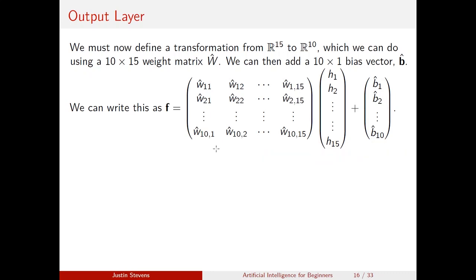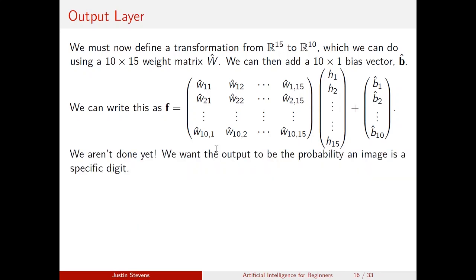We aren't done yet. At the end of this process we just have a weighted sum, but what we ultimately want is a probability that an input image is a specific digit. So we define another activation function called softmax. Using softmax on the input [1, 2, 3]: first take e to each value and sum them, so sum = e^1 + e^2 + e^3. Then the first value is e^1 / sum, the second is e^2 / sum, and the third is e^3 / sum.